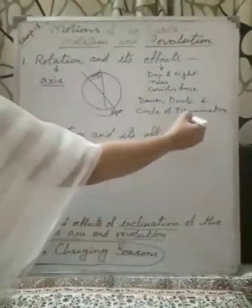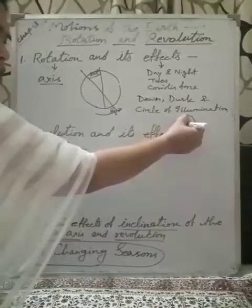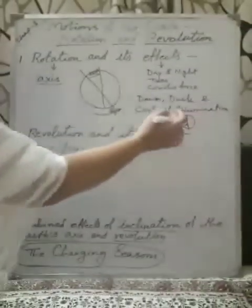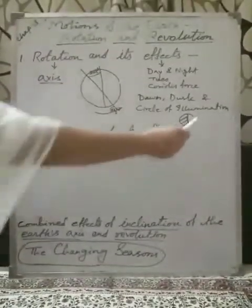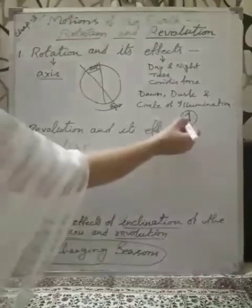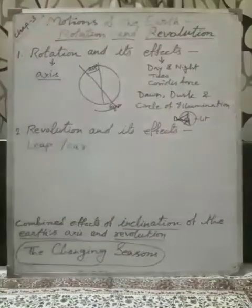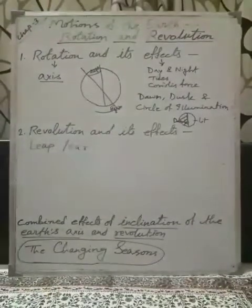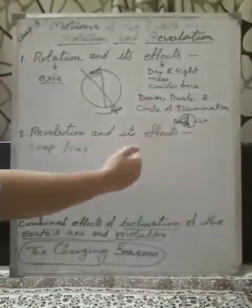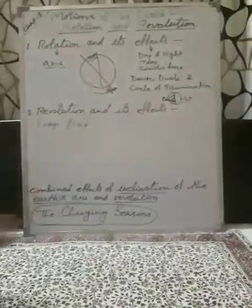And circle of illumination. Circle of illumination is an imaginary line which divides our Earth into two half. One lit half, another dark half. Yes, due to rotation, day and night occurs. So, half of the Earth gets light. Half of the Earth doesn't get light. So, here we can see dark. And here we can see light. So, circle of illumination is an imaginary line which form dark half or which divides our Earth into two half. One dark half, another lit half. This line form due to rotation. So, these are the few effects of rotation.